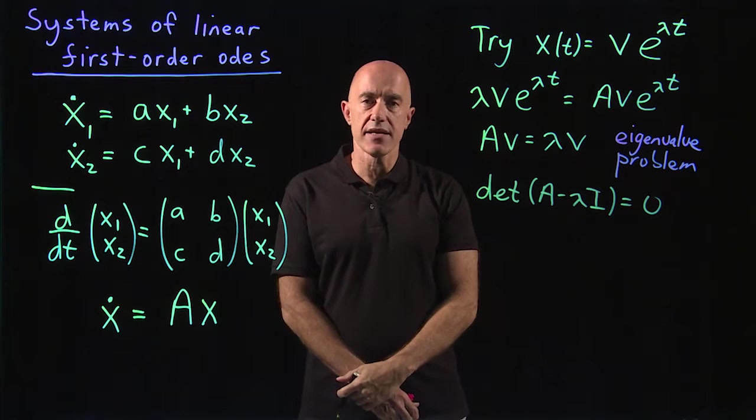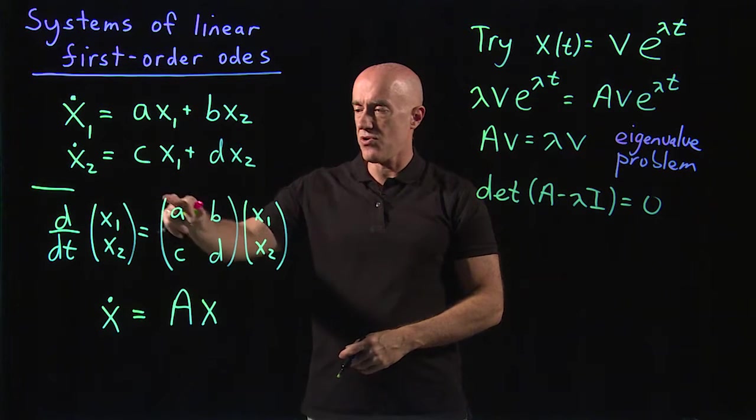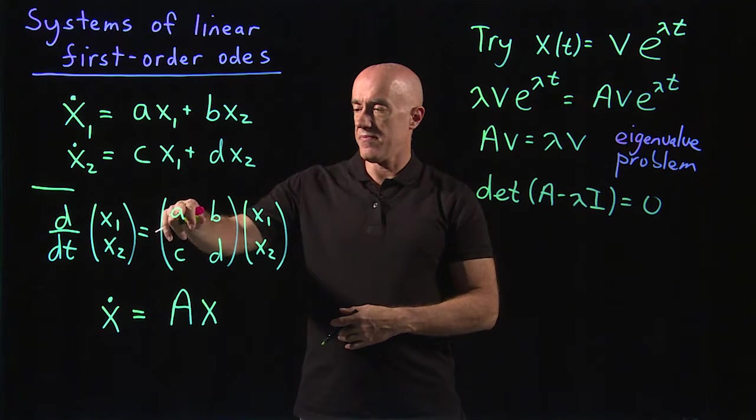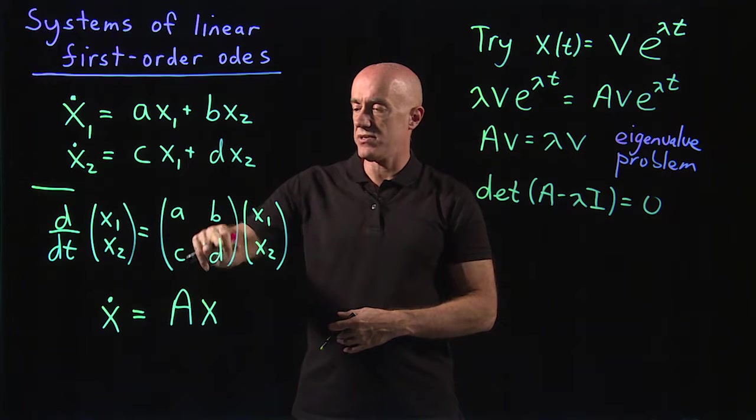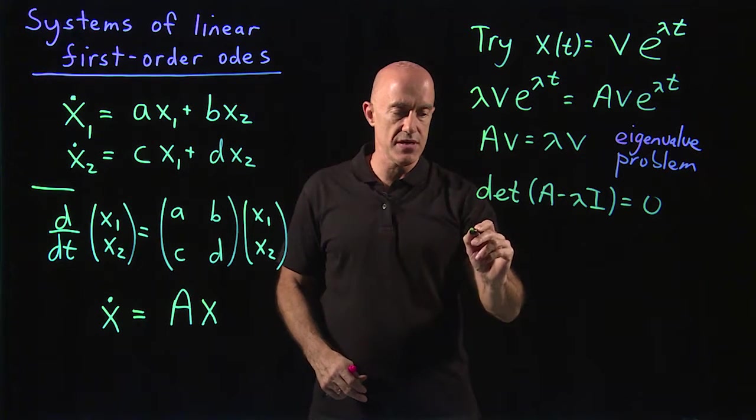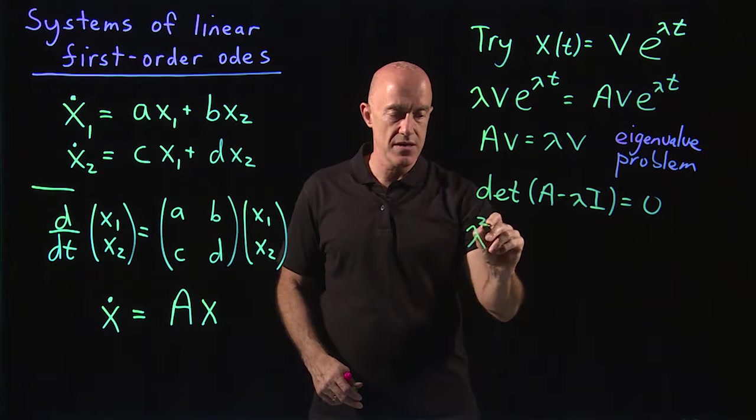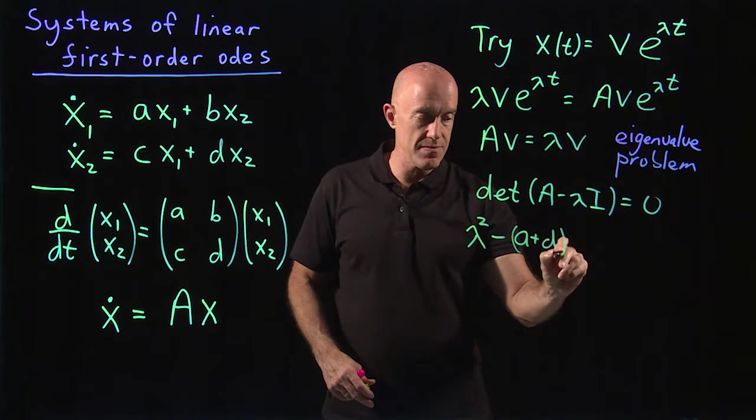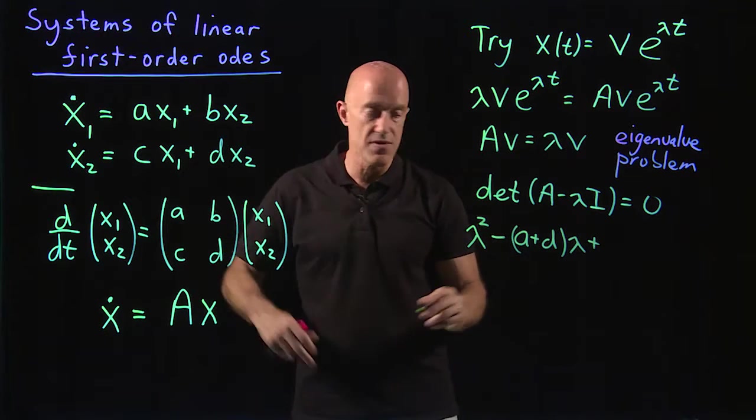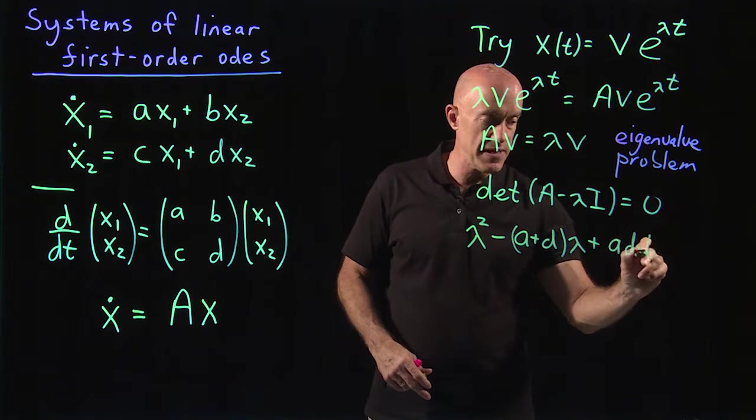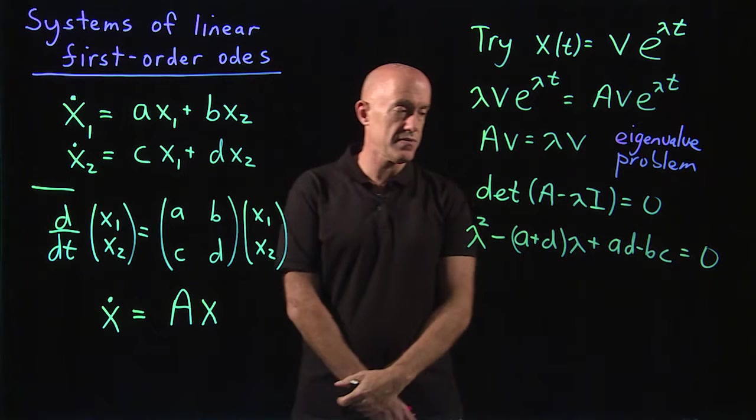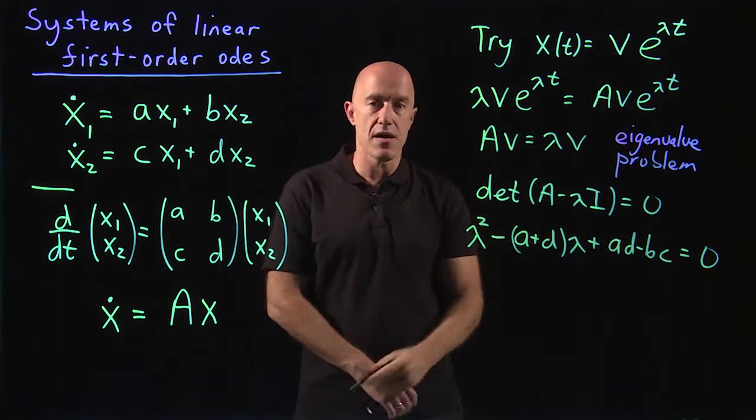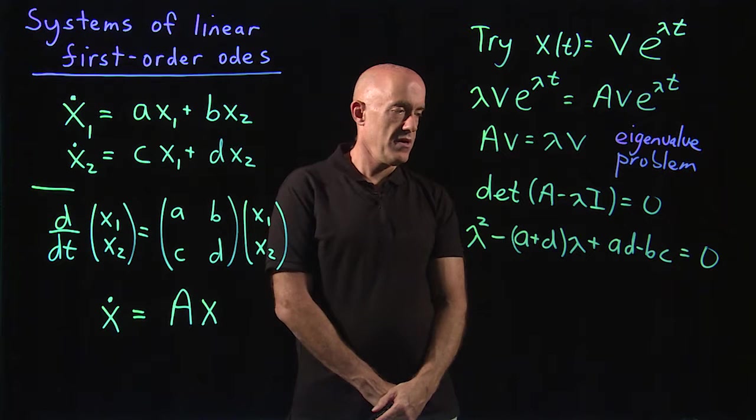This is a quadratic equation for lambda. If you remember your determinant of the 2 by 2 matrix, the A minus lambda on the diagonals and b and c off, this equation becomes lambda squared minus the trace of the matrix, a plus d, times lambda plus the determinant of the matrix, ad minus bc, equals 0. Okay, that's doing this determinant, and if you remember this from a matrix algebra course.